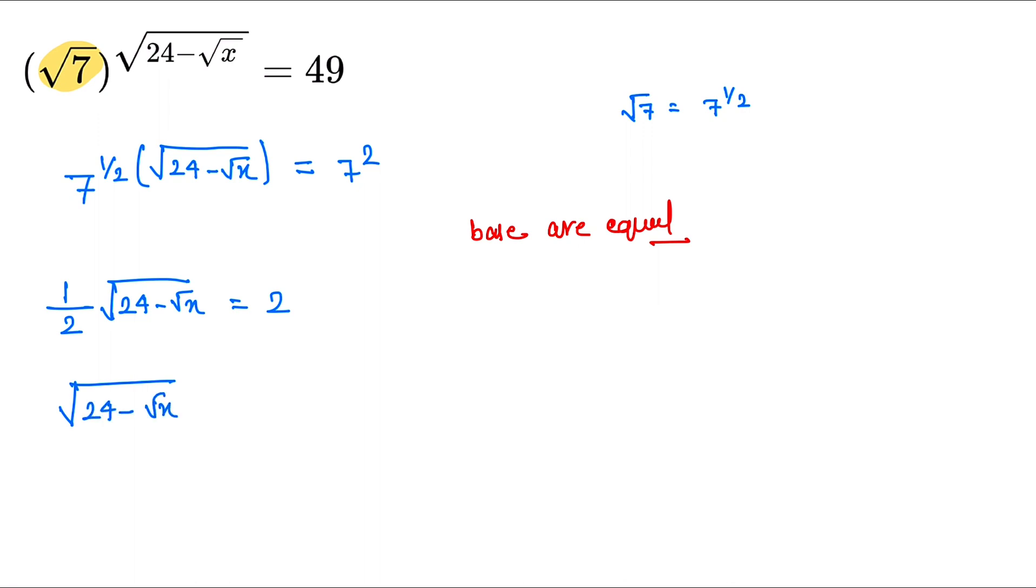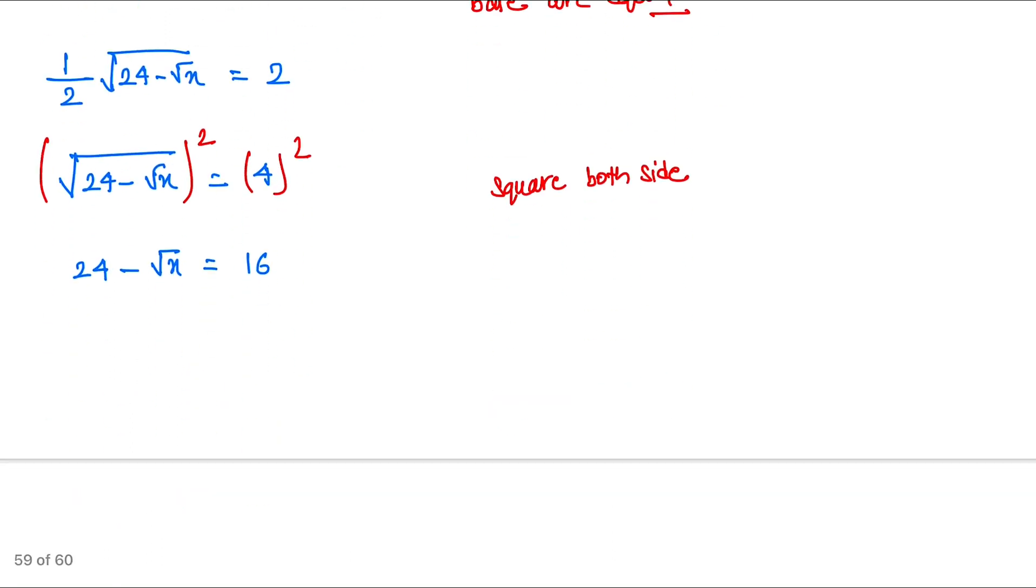Now we square both sides in this question. So this one is 24 - √x = 16 when we square the 4, it becomes 16.